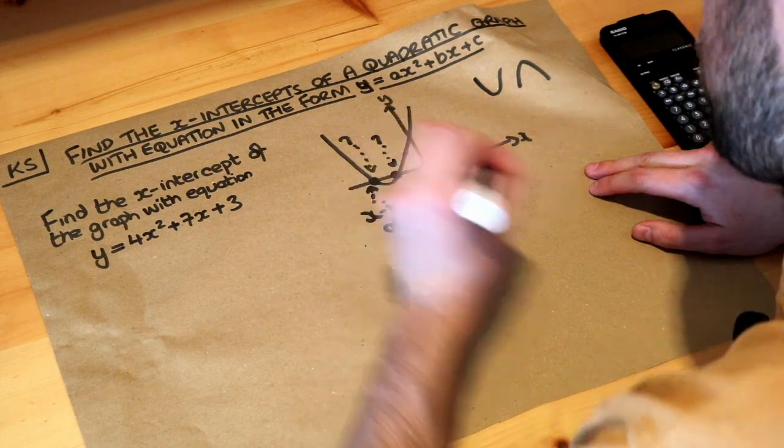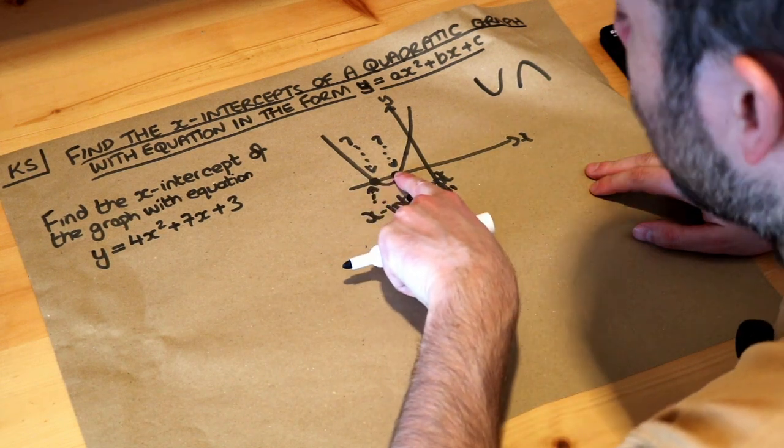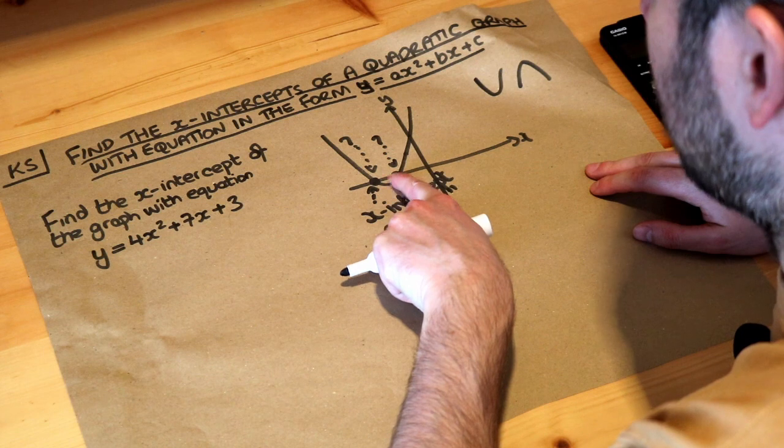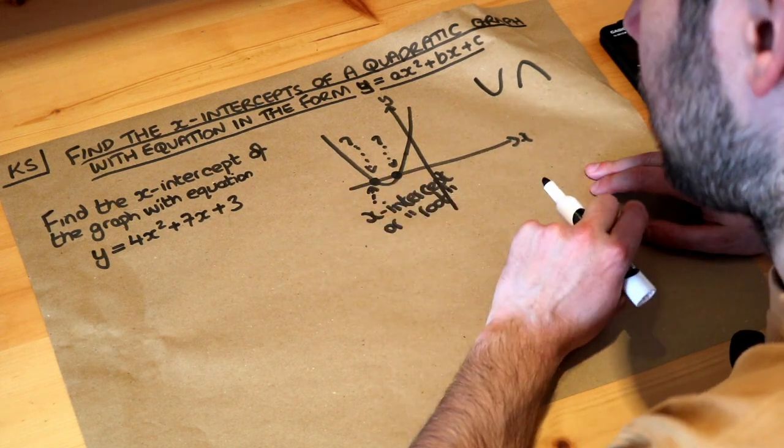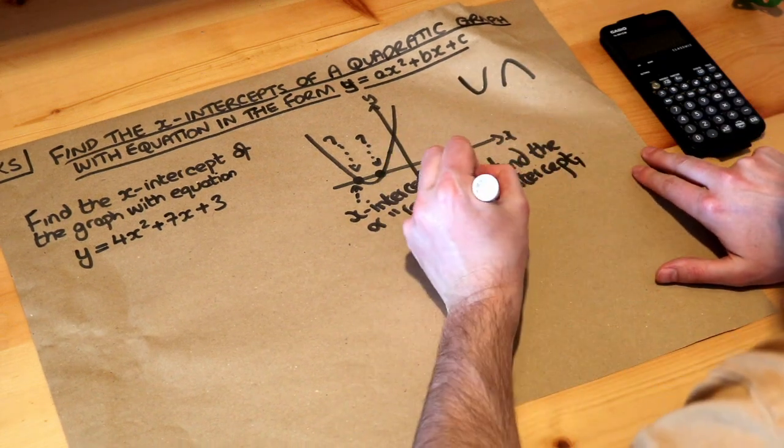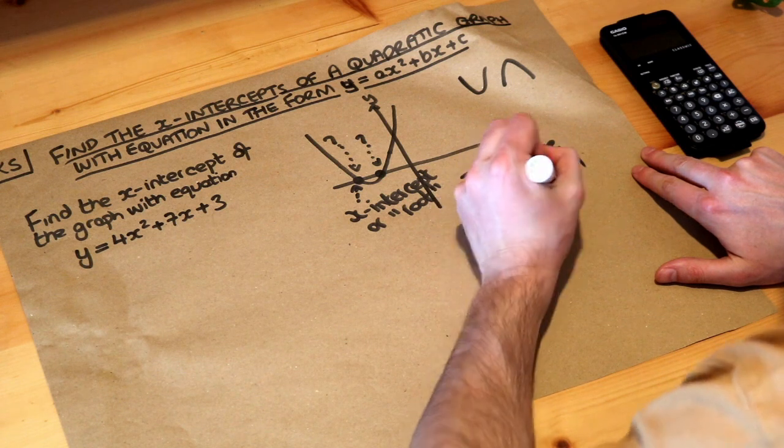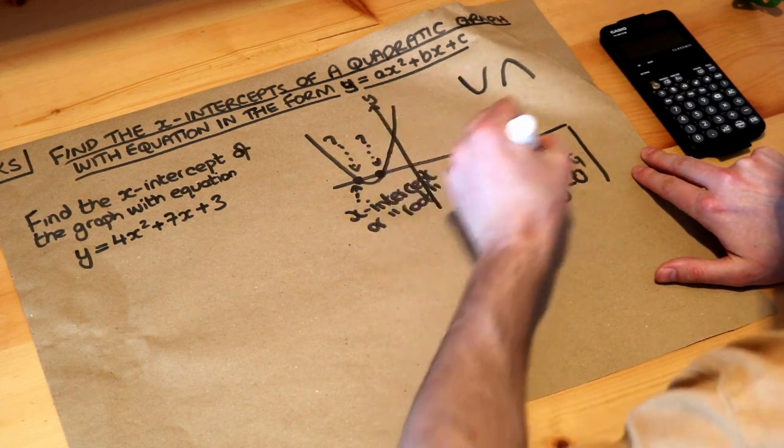And do you remember in the previous video we saw that to find the x-intercept, well this point and this point, we know the y value of both these points is going to be zero because any point on the x-axis the y value is zero. So as a reminder to find the x-intercept, make y equal to zero, let y equal to zero. So that is the key point with this particular video.